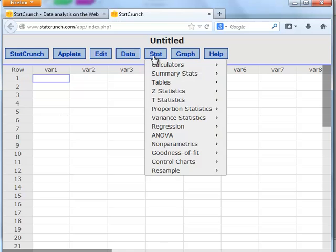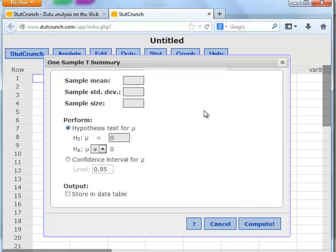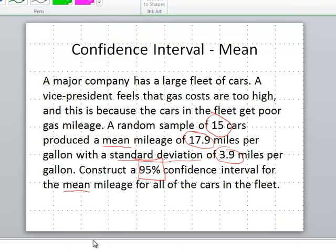This is under Stat, T-Statistics, one sample. This time we have summary because I have the mean and standard deviation. But if we had the actual data, we would choose with data instead. So with summary, we want to write down the sample mean. That was 17.9 for the mean.